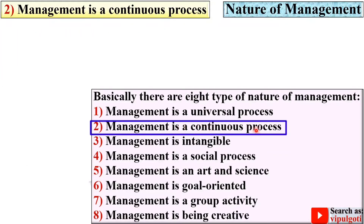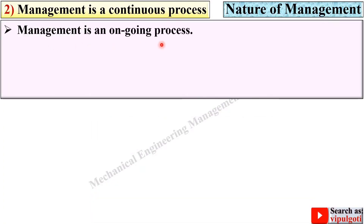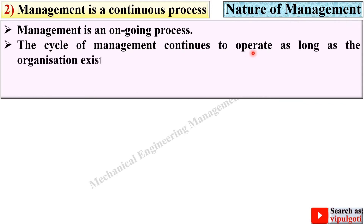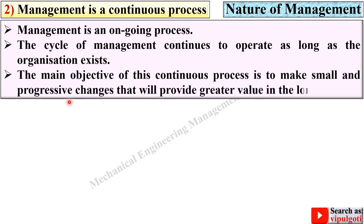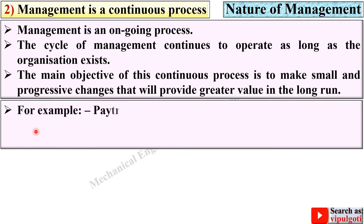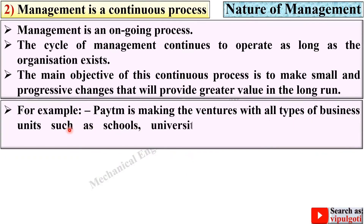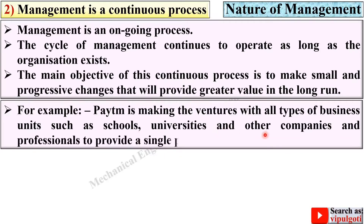Second, management is a continuous process. Management is an ongoing process — the cycle of management continues to operate as long as the organization exists. The main objective of this continuous process is to make small and progressive changes over time, providing greater value in the long run. For example, Paytm is making ventures with all types of business units — schools, universities, and companies — to provide a single platform for all payment solutions.